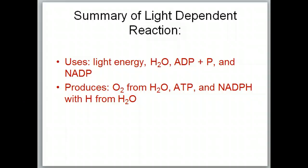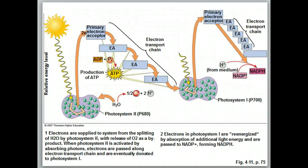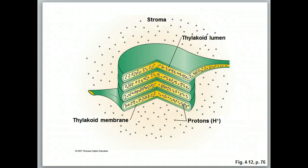Here's a summary of this process. Referring back to the diagram: what is going to be used is light energy, water, ADP and phosphate, and NADP. What's going to be produced by the light-dependent reaction is oxygen from water, ATP, and NADPH with the hydrogens from the water. Here's your overall diagram showing the light-dependent reaction.